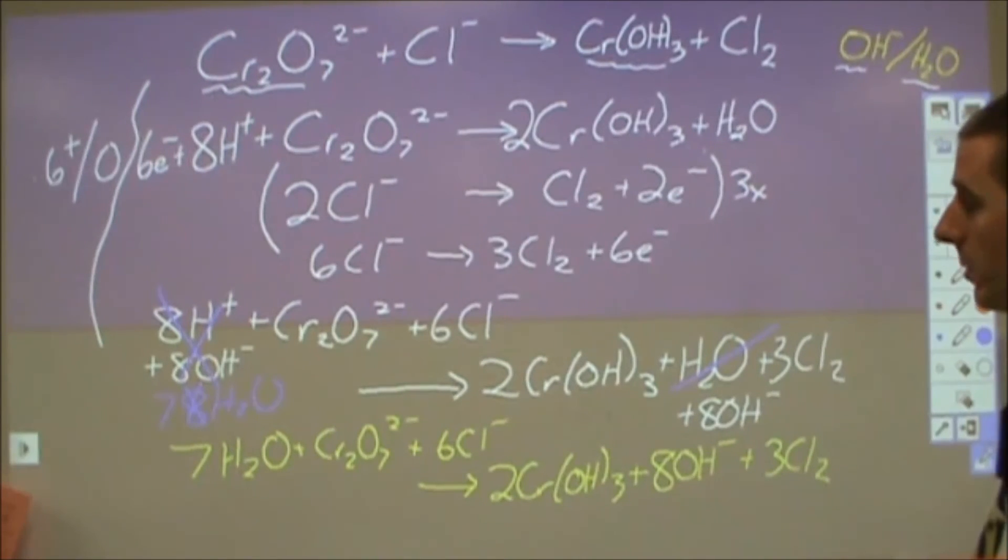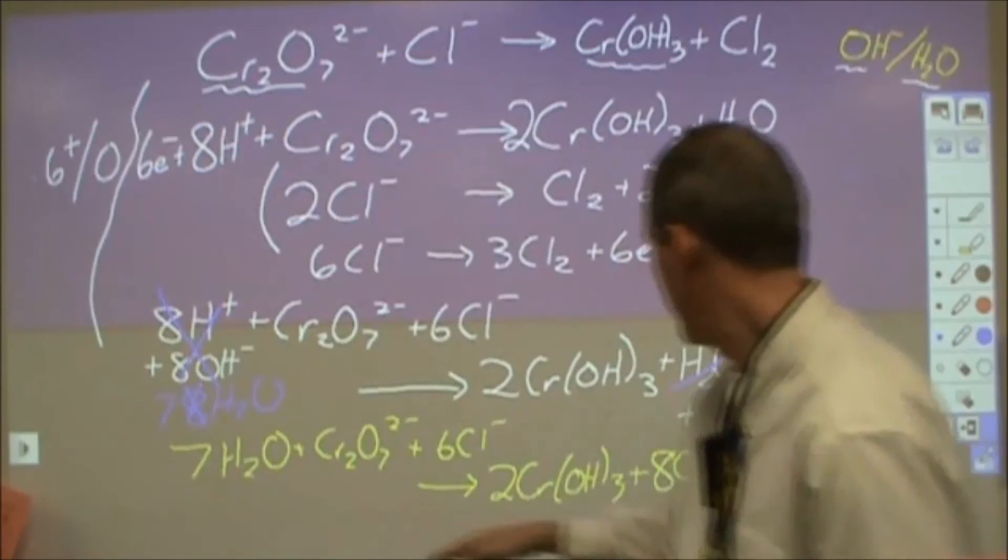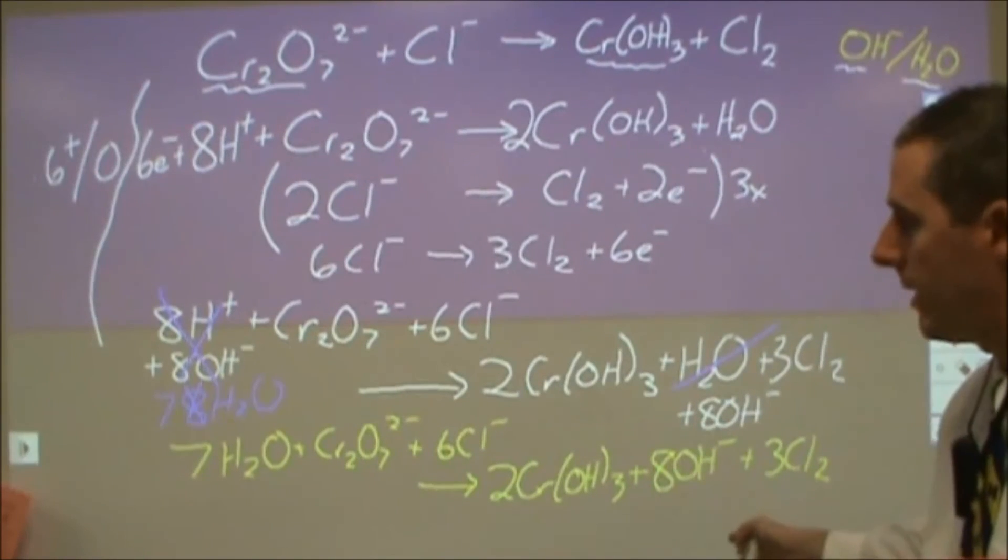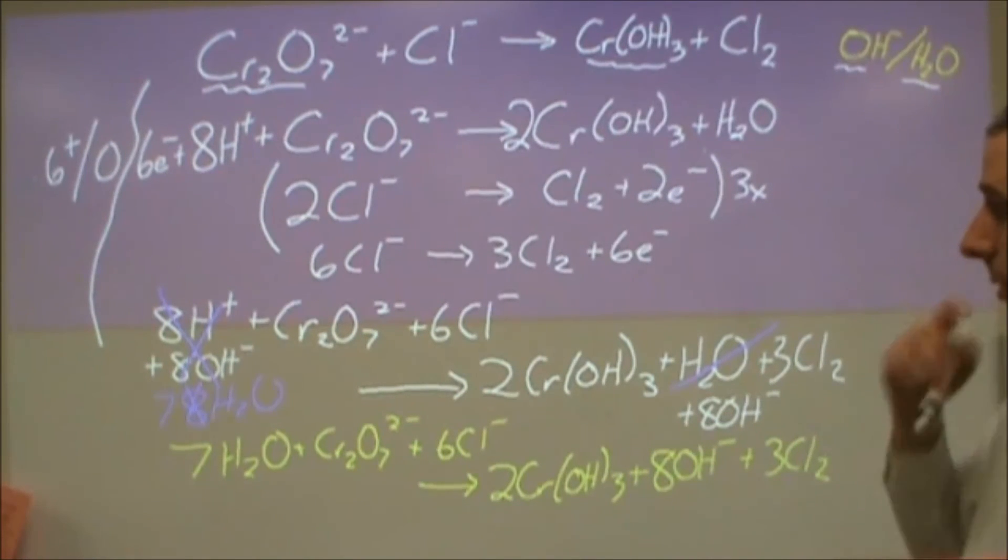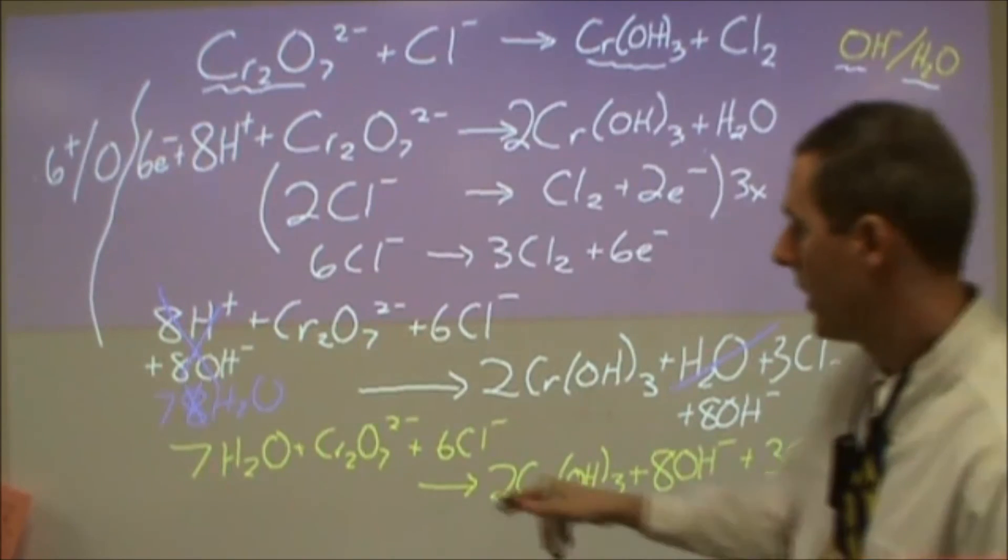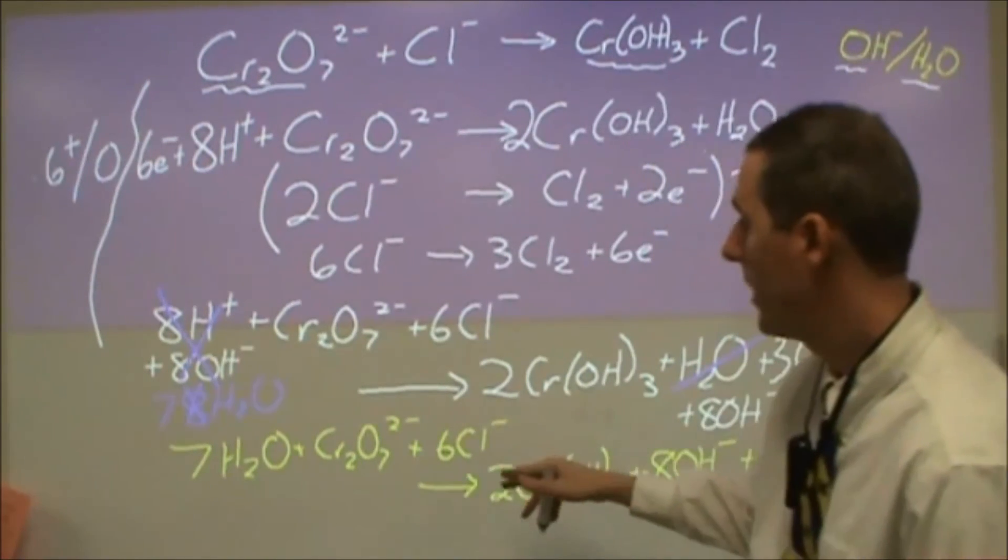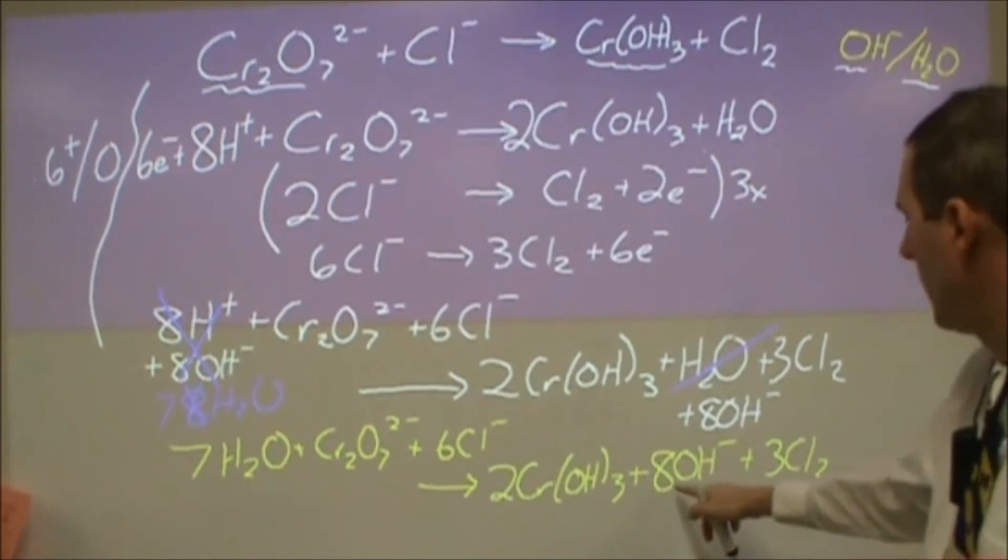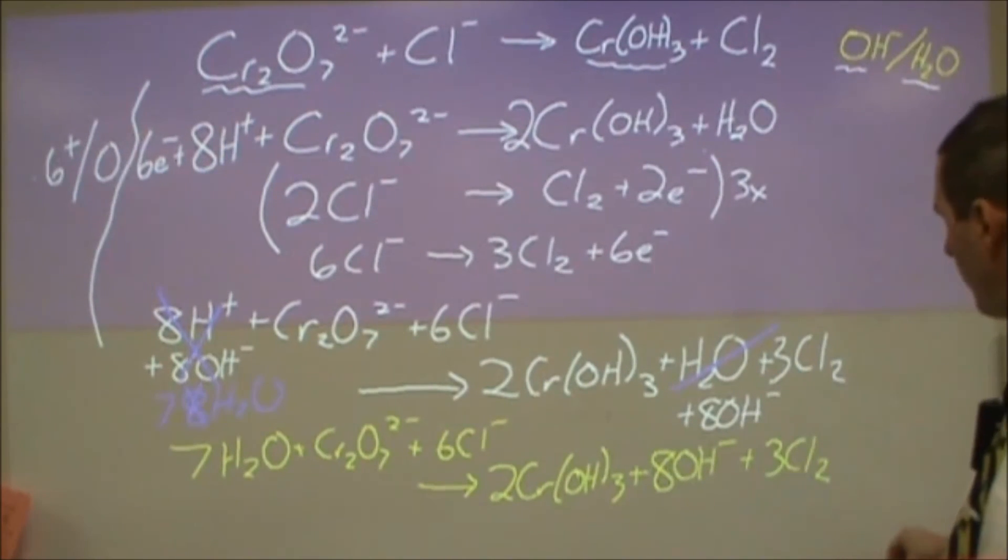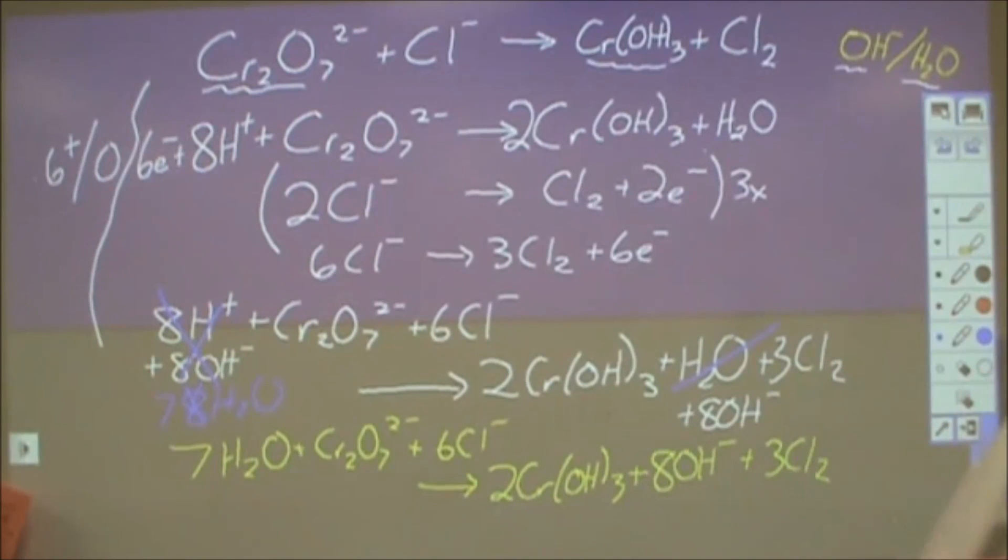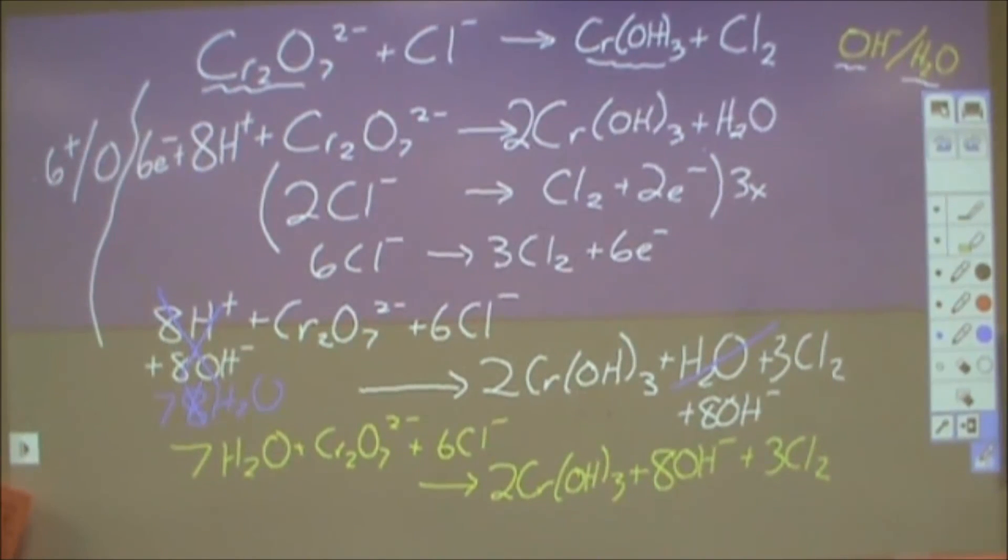Now at this point you want to do two things. You want to make sure that all of your numbers add up. I have 14 hydrogens and I have 14 hydrogens. I have 14 oxygens and I have 14 oxygens. Six chlorines, six chlorines, two chromiums, two chromiums. You also want to double check the charge. I have a two minus and then six more minus. I have eight minus on the left and I have eight negative charges on the right and therefore I know that I'm balanced. That's how you want to go through and attack this and the end goal is to get both your mass and your charge to be balanced when you're done with the whole reaction.